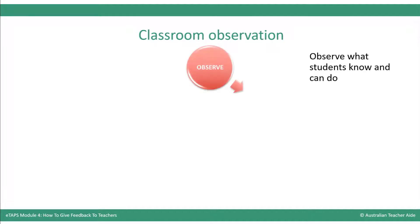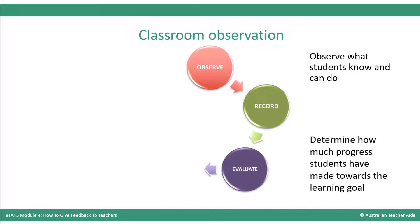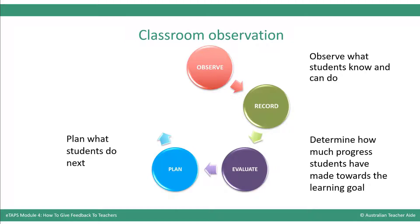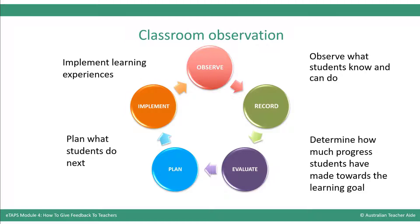First, we observe what students know and can do, and record the information either as it happens or soon afterwards. Then we evaluate the information to determine how much progress students have made towards their learning goal, plan what students need to do next, and implement the appropriate learning experiences.